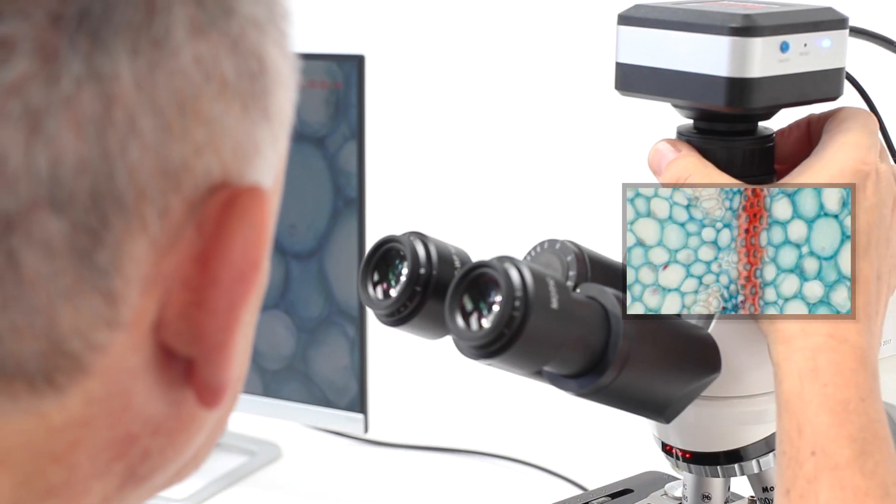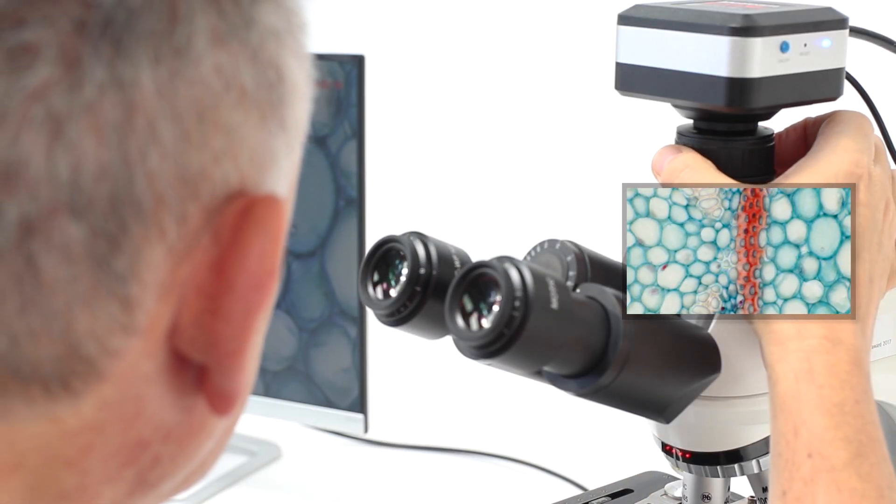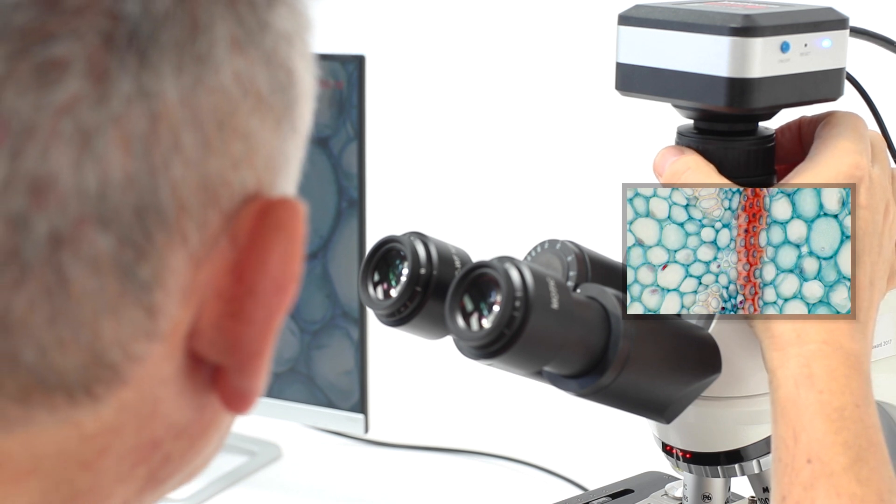Next, view the live image on your external device and adjust the focusable ring on the C-mount adapter until the image is sharp on the screen.